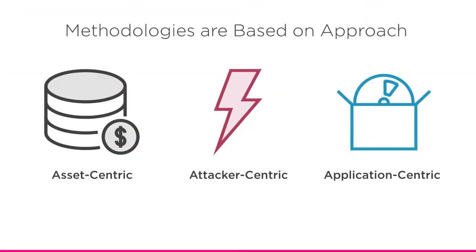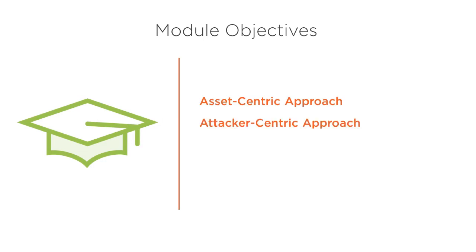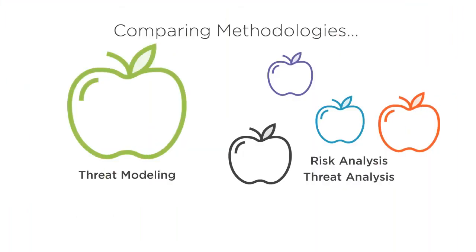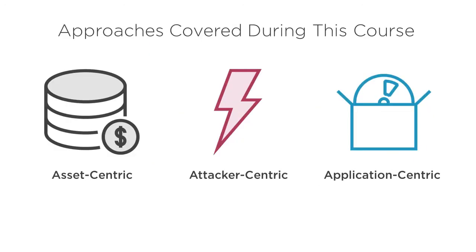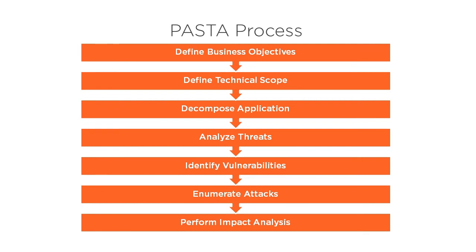Threat modeling really is beginning to take off and with great reason. It is one of the most effective ways to reduce the risk and increase the security of applications. But what is the best methodology? What are their differences? Which one should you use and why?